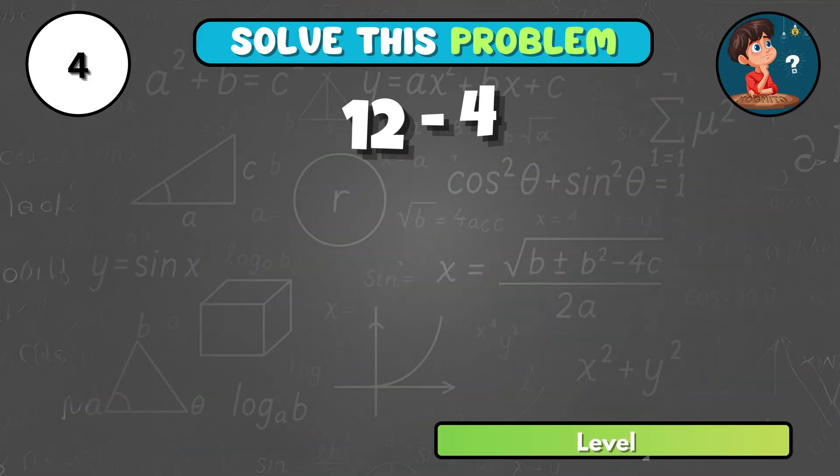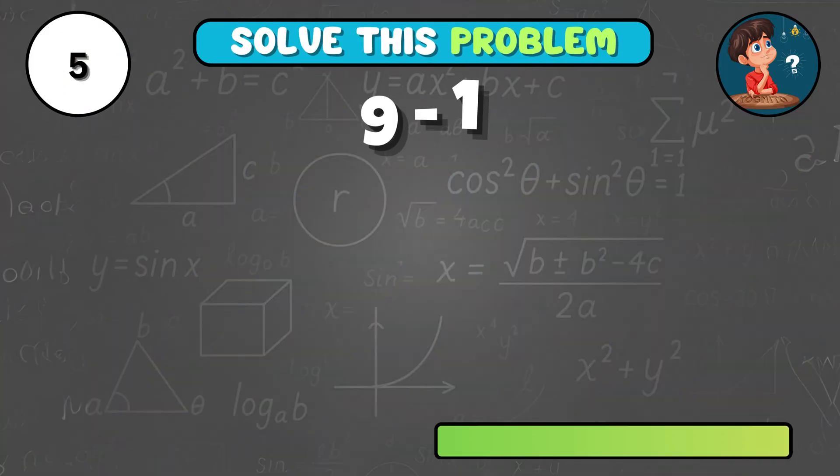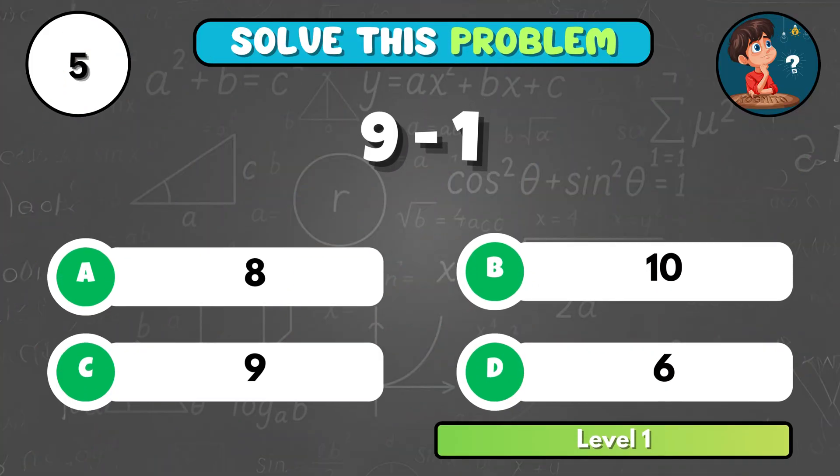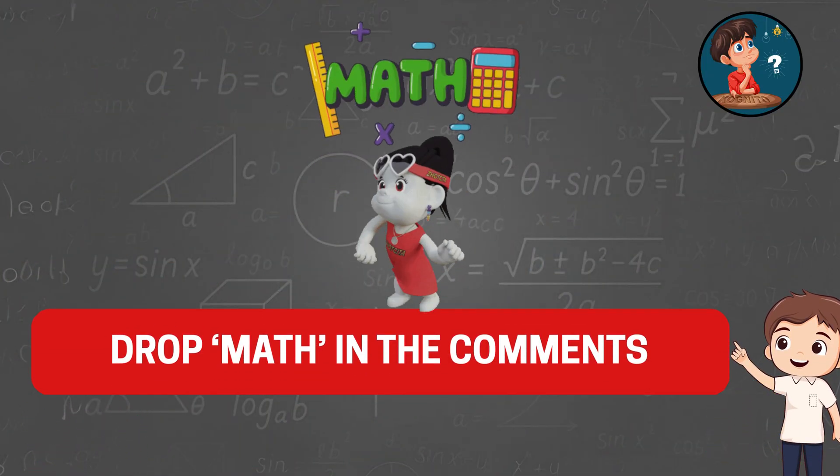Quick one! What is 12 minus 4? It works out to C, 8! How about 9 minus 1? The answer is A, 8! If you nailed the first 5 questions, drop the word math in the comments to prove you're a real genius!